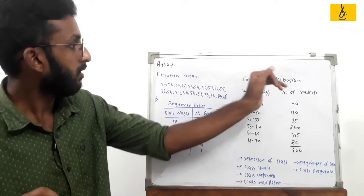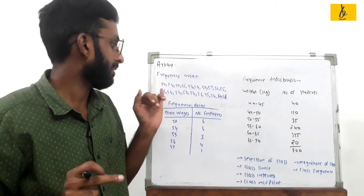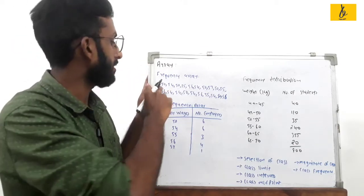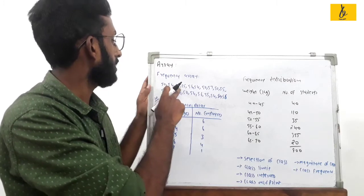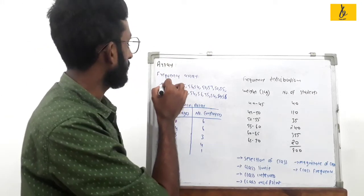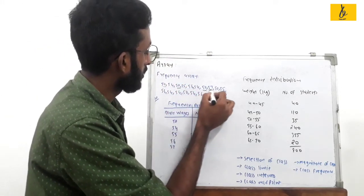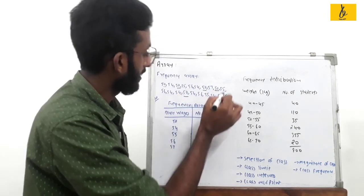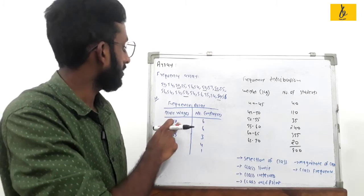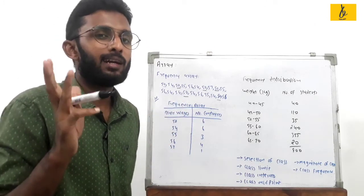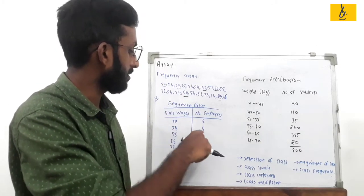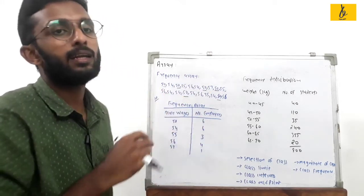Frequency Array: In a company, we list employees one by one — employees 1, 2, 3, 4, 5, 6. We call this a Frequency Array, using values like Rm (raw measurements). This is the Frequency Array.